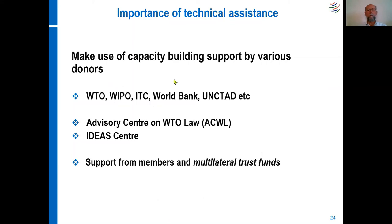There is a lot of support that various donors can provide. Apart from the WTO through its seminars, WIPO can advise on intellectual property rights issues, the ITC typically gives a lot of advice, and the World Bank and UNCTAD usually also provide advisory services. There are NGOs like the Advisory Center on WTO Law and the IDEA Center. Members also sometimes provide bilateral support, and there are other trust funds. Make good use of all the advice you can get. But in the end, don't be a slave to the advisors — you have to judge whether the advice is reasonable, is supported by evidence, and is good for your country in the long term.